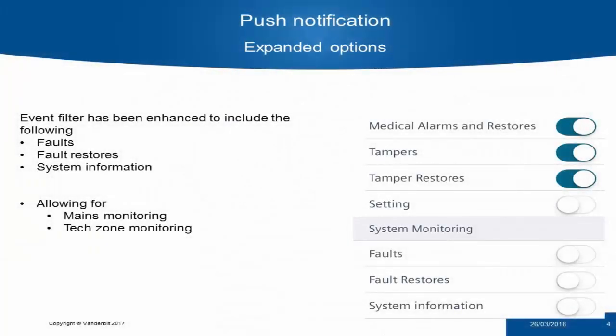First, we're going to talk about the push notification enhancements. We have expanded the filter options available in push notifications in order to allow for fault, fault restores, and system information. This is a main request for mains monitoring and tech zone monitoring, so that should any tech zones be activated, they will now be pushed directly to the user's device if they enable this option.